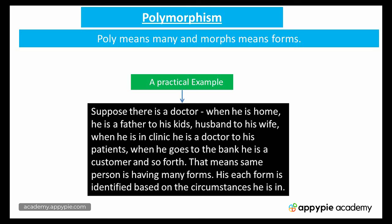The third one is polymorphism. Poly means many and morphs means forms. I would explain this with the help of a very practical example from routine life. Suppose there is a doctor. When he is home, he is a father to his kids and a husband to his wife.